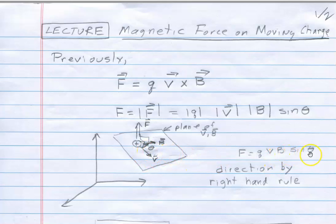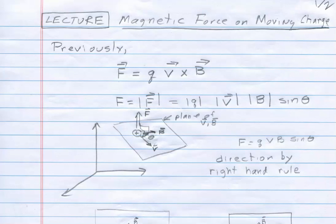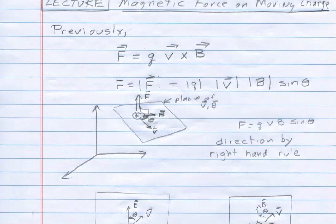It can also vanish if the angle between V and B is 180 degrees or zero. If it's zero, then V and B point in exactly the same direction, and there's no force in that case even though the charge may be moving. Or if theta is 180 degrees, then V is moving in the opposite direction to B, and again that vanishes by virtue of the sine function. So if V vector and B vector are parallel, or if V vector and B vector are anti-parallel, then there is no magnetic force on the charge.